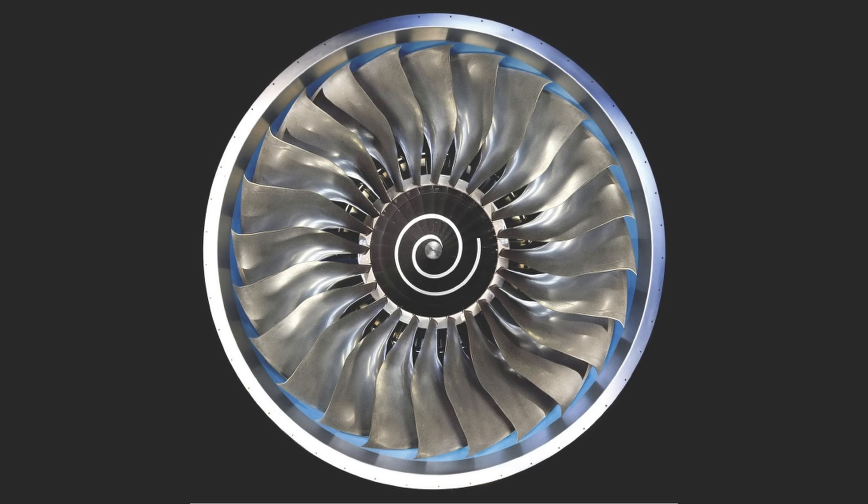In high bypass turbofans, inner fan blade sections are optimized for compression into the engine core, while outer sections focus on bypass thrust.